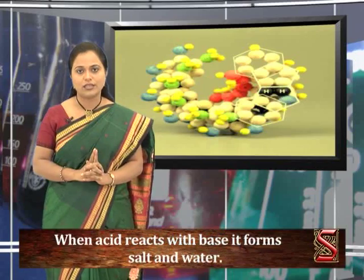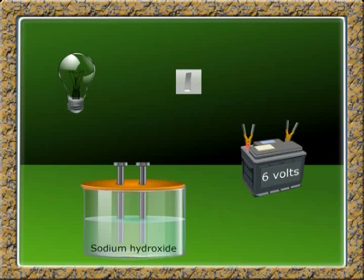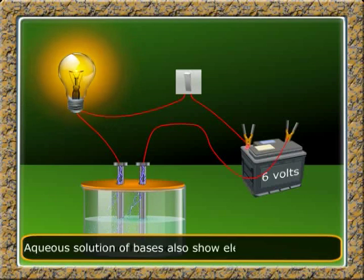Take some amount of sodium hydroxide in a beaker. Insert a rubber cork fixed with two nails at the top. A bulb and a switch are connected with wires; one end is connected to a 6V battery and to one nail, the other end to another nail. Switch on the circuit. Due to the presence of sodium hydroxide (NaOH), the bulb glows, showing that aqueous solutions of bases also show electrical conductivity.